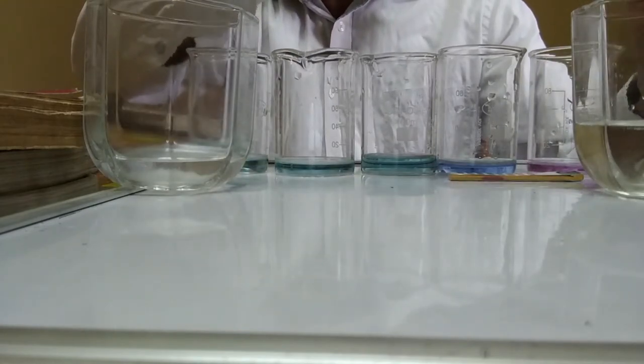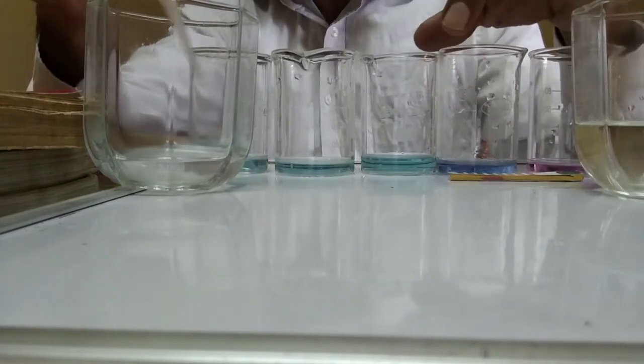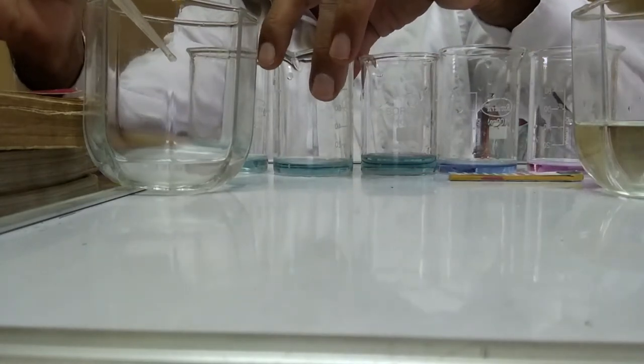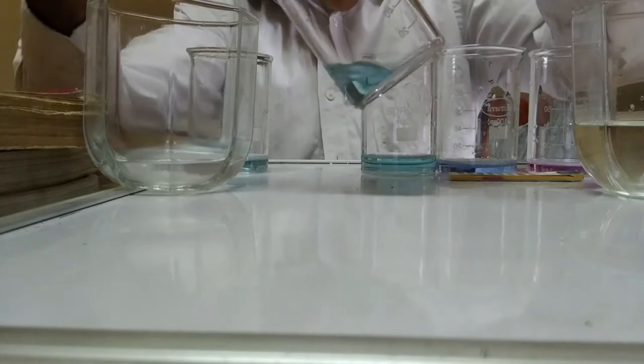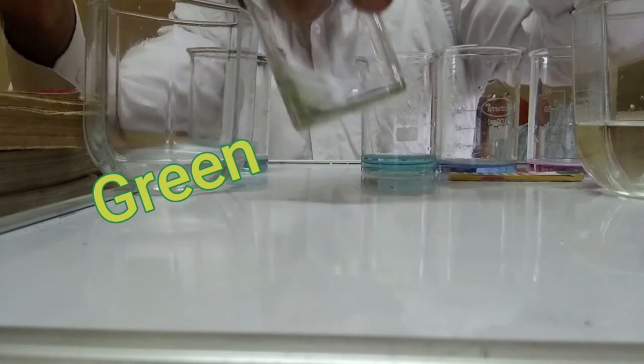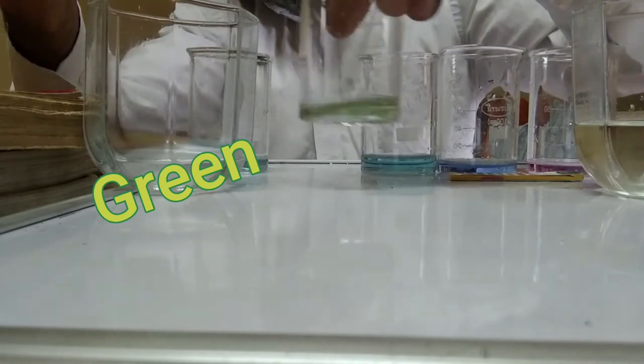Thereafter I remove the acid from the dropper and take the dilute base and take up the fourth beaker. I add a little bit of base into it. The colour turns green, beautiful green.